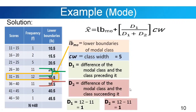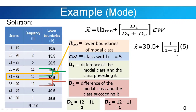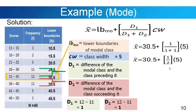Now substituting the values into the mode formula: x̄ = 30.5 + [1 / (1 + 1)] × 5. Simplifying: 1 over 2 is one-half. Multiply one-half by 5 before adding to 30.5. That gives 30.5 plus 2.5, and our mode is equal to 33.